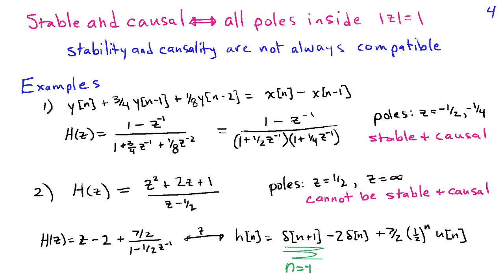The relationship of the poles to the unit circle is critical for determining whether a system described by a difference equation is stable and causal. The poles tell us other things about the system as well, which we'll explore later.